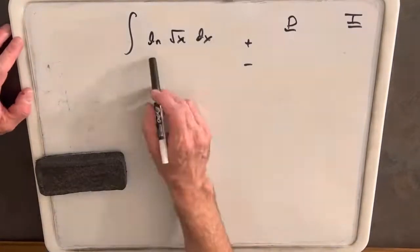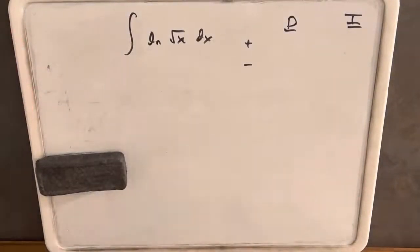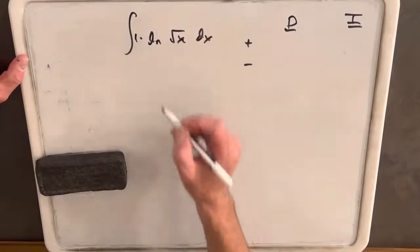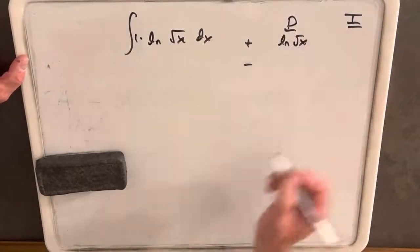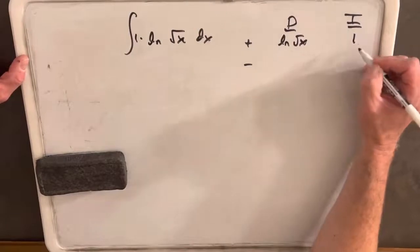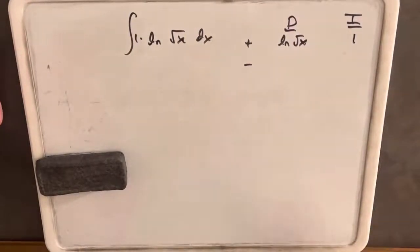Okay, so now we're ready to integrate ln square root of x using the DI method. We'll add our 1 into the problem. We'll differentiate ln square root of x because we don't really know how to integrate that. And we'll integrate just a 1, which is the real trick of this whole problem.